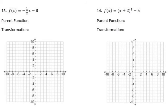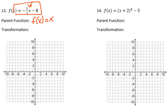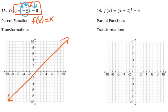Let's take a look at number thirteen. Look at what is happening to x — nothing. It's not squared, not square rooted, not cubed, not absolute valued. So that's going to be a linear function, so it's f of x equals x. That's our parent function, and it basically looks like a diagonal line. So what's the transformation? Well, a couple of things: there's a negative, a one-half, and a minus eight. So we know it's going down eight, that negative means it's reflected, and the one-half means it's going to be a compression.